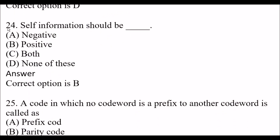Next question: Self-information should be — Option A: negative. Option B: positive. Option C: both. Option D: none of these. The right answer is option B, positive. Self-information should be positive, not negative.